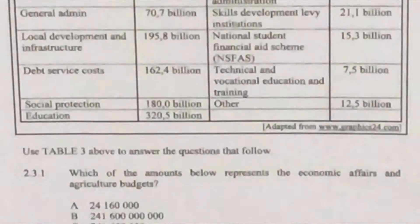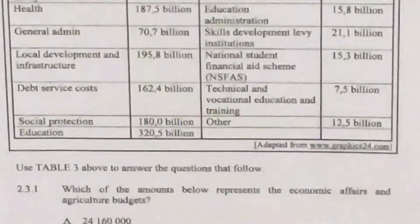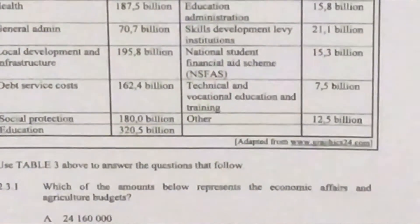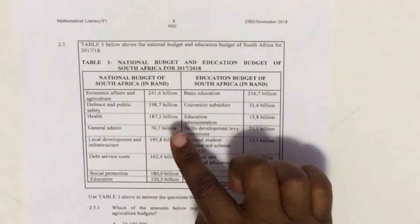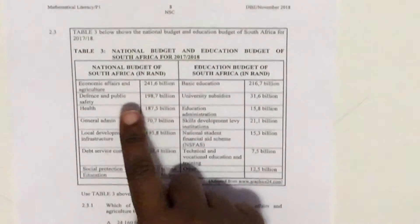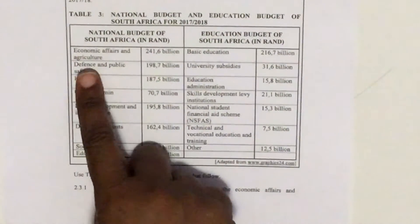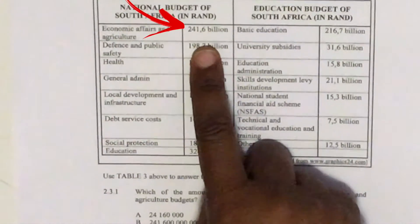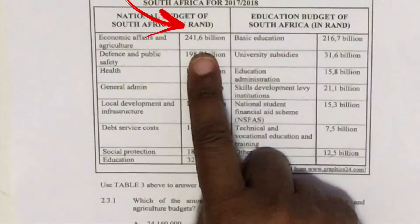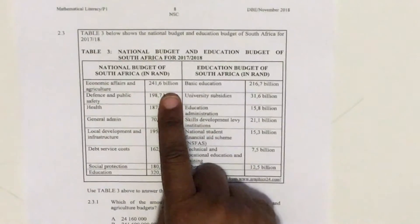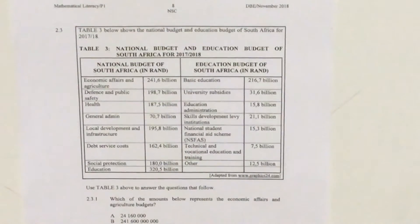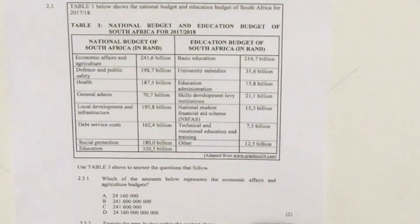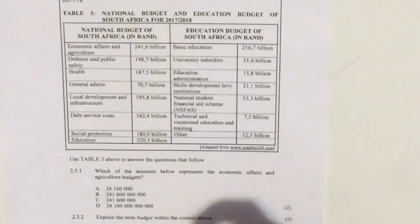We're going to look at the first question, which is question 2.3.1. It says: which of the amounts below represents the economic affairs and agriculture budget? Let's go to the diagram — under the national budget, the economic affairs and agriculture amount is 241.6 billion. When you look at the question paper, the options don't have the word 'billion' written out.